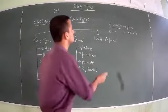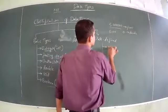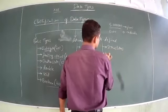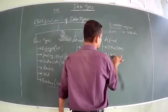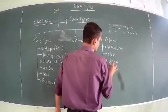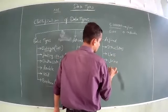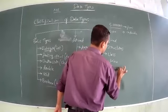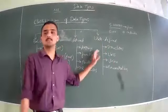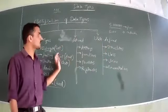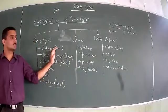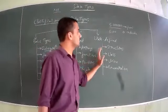Coming to user-defined types, we have: Structure, Class, Union, and Enum. Again, these are separate chapters. In this chapter we will only cover basic types. Here I will talk about keywords, because whenever you remember the keywords it will be very easy to write and understand the code. For structure, we use the keyword 'struct'. For class, the keyword is 'class'. For union, the keyword is 'union'. And for enumeration, the keyword is 'enum'.